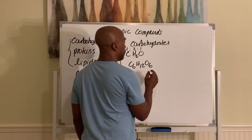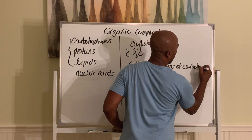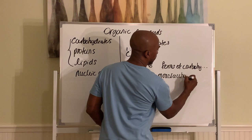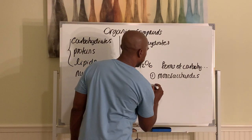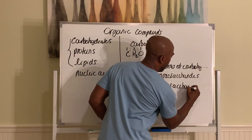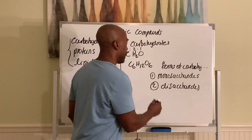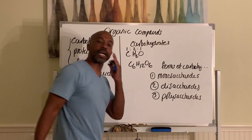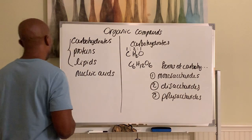Carbohydrates come in several forms. In their simplest forms, you have monosaccharides. Two monosaccharides can combine to form disaccharides. And when you have many monosaccharides linked together in long chains, they form polysaccharides. So you have monosaccharides, disaccharides, and polysaccharides as the three common forms of carbohydrates.